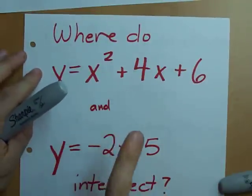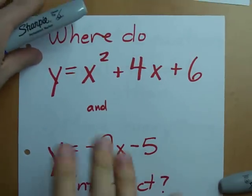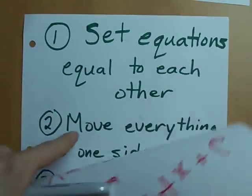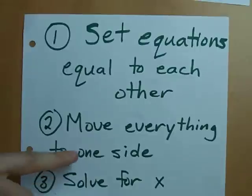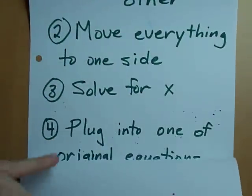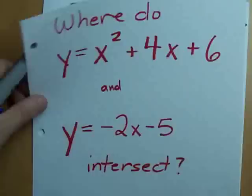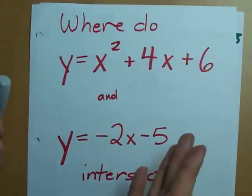Where do this parabola and this line intersect? Four-step process. Set the equations equal to each other. Move everything to one side. Solve for x and plug each of your answers into the original equation. Look how easy this is.